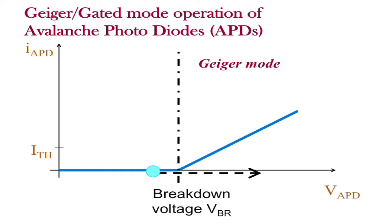During the gate, the voltage is increased above the so-called breakdown voltage, see the green point. If a photon impinges on the APD, then an avalanche effect generates a large current. This generates the detection event.